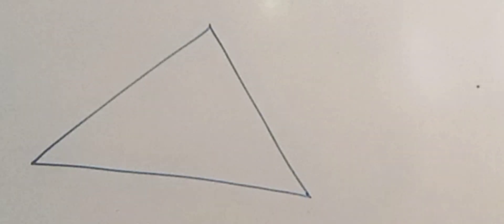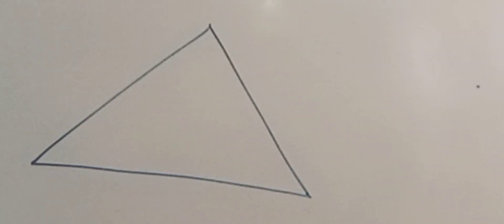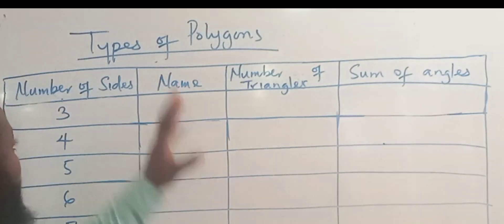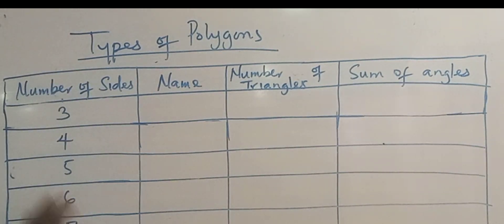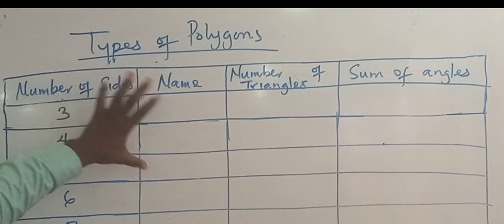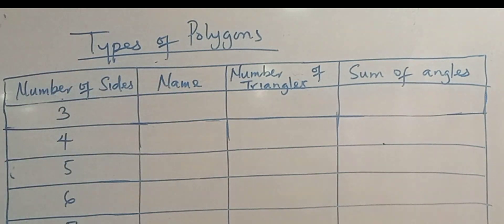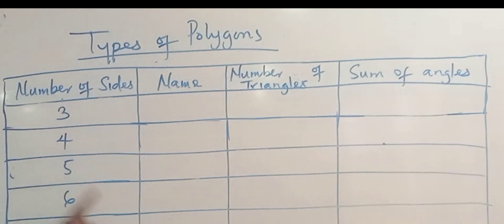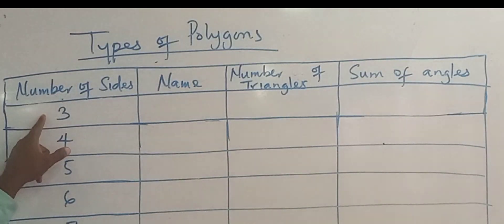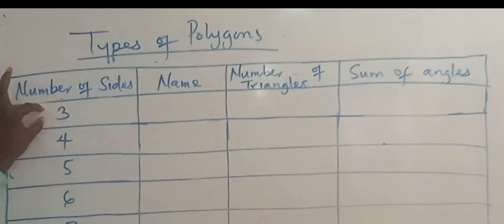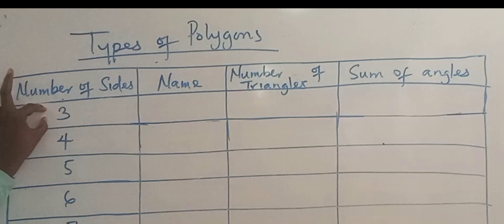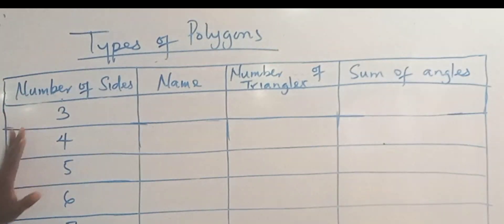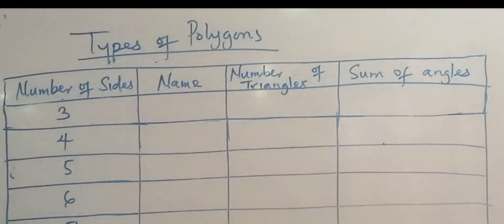Now we want to look at the types of polygons. Let's draw this table. We want to look at the types of polygons we have. These are the number of sides — don't forget from the definition that a polygon must have at least three sides — so three, four, five, six, seven, eight, nine, and so on.